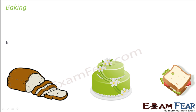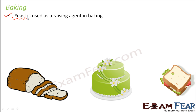Now let us look at the next application, that is in the baking industry. Microbes play a very important role here. The microbe used is yeast, which belongs to the group of fungi, and it is used as a raising agent in baking. A raising agent is something which raises the dough — it makes the dough expand and become fluffy and puffy, forming bubbles. That is what yeast does in all sorts of baking processes.